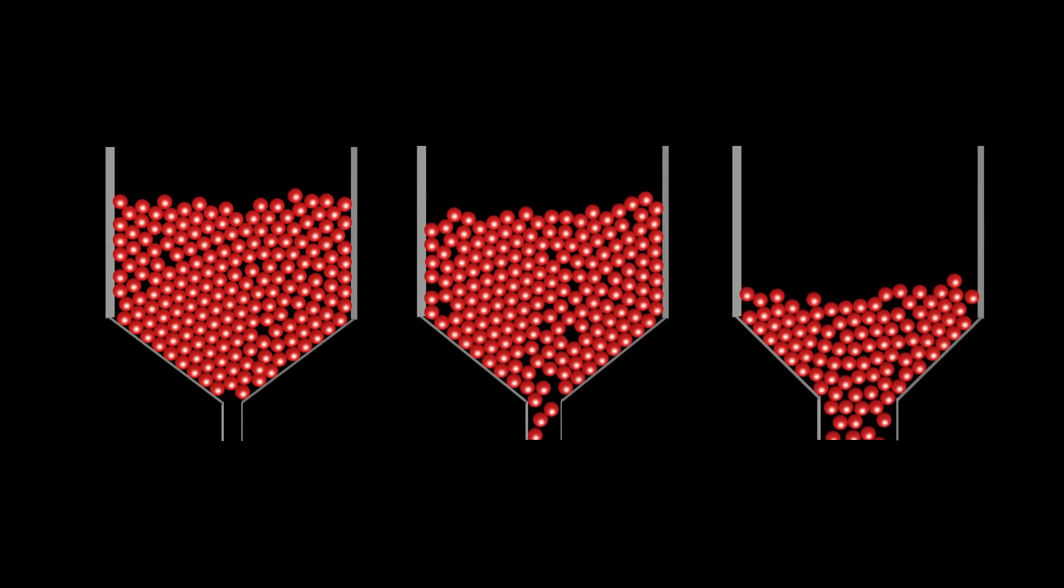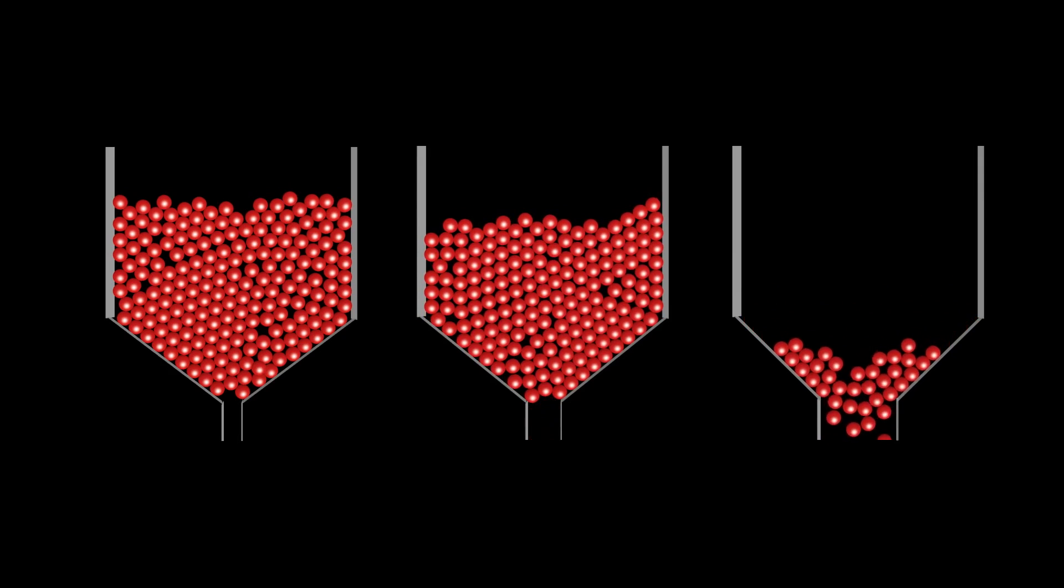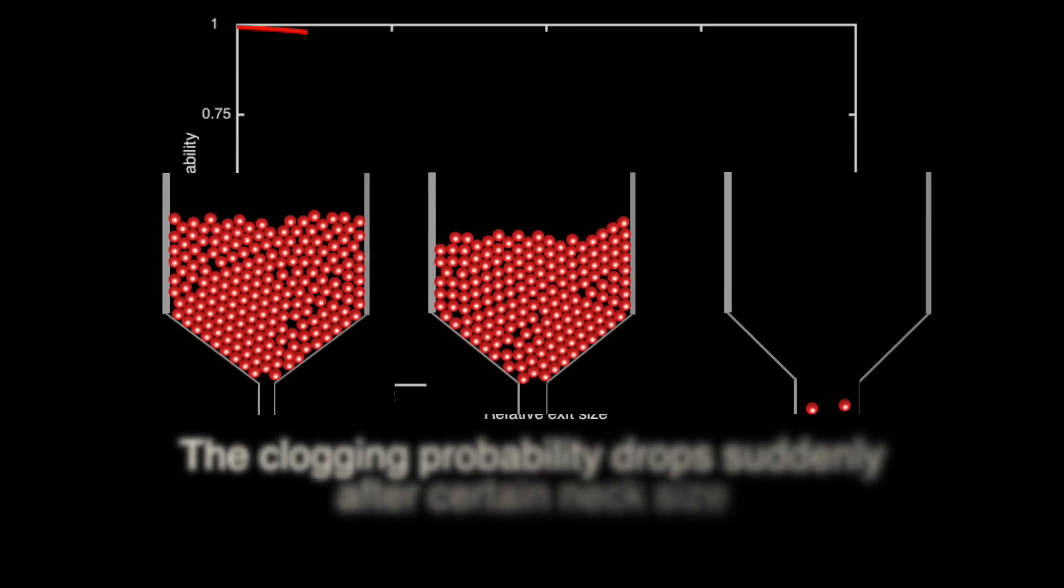So commercial hourglasses must have large necks, right? Yes. Large enough to avoid getting clogged, but small enough to control timing.